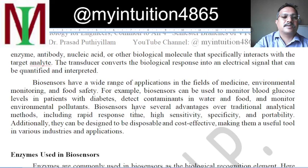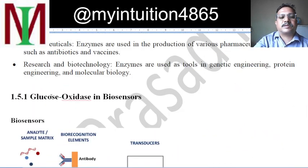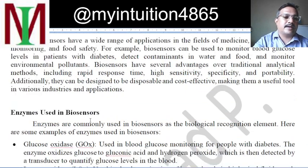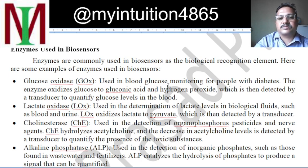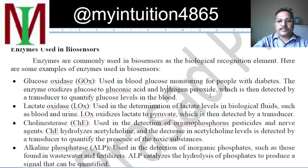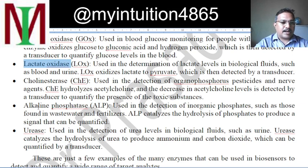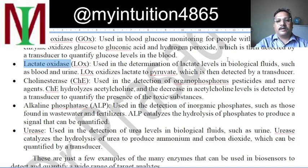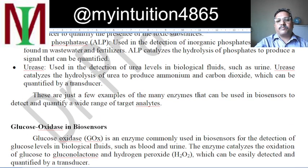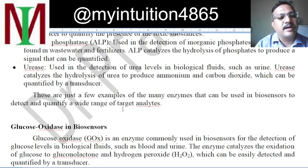Different enzymes are used in biosensors. As mentioned in subheading 1.5.1, glucose oxidase is used to sense glucose levels. Lactase oxidase is also used, and it is actually used in biobleaching as well. Other examples include cholinesterase, alkaline phosphatase, and urease. These are commonly used enzymes being studied and modified for various sensing applications. These are just a few examples of the many enzymes which can be used in biosensors to detect and quantify a wide range of target analytes.